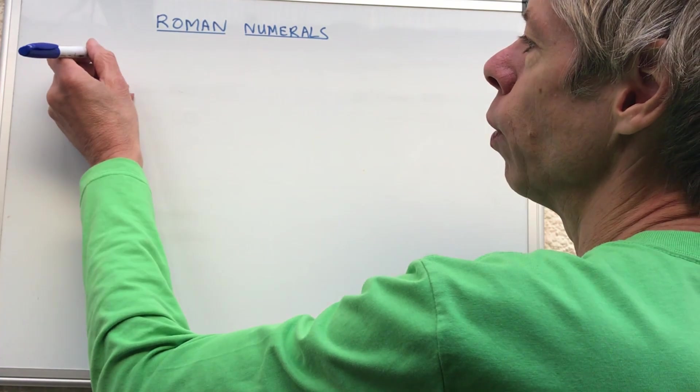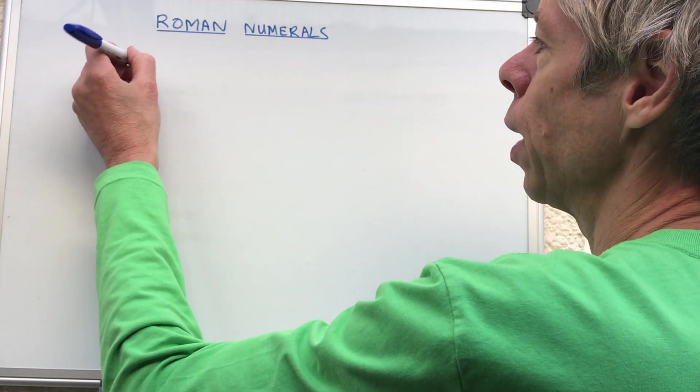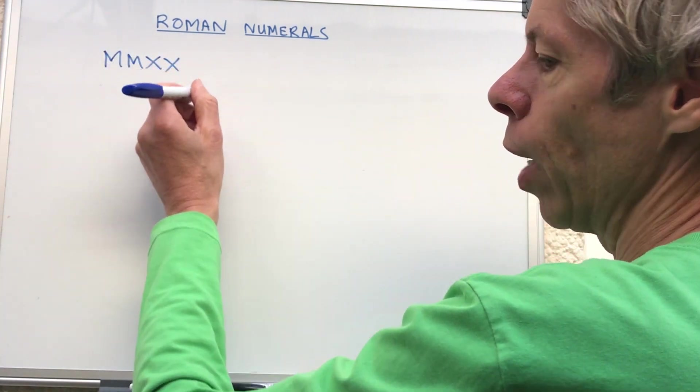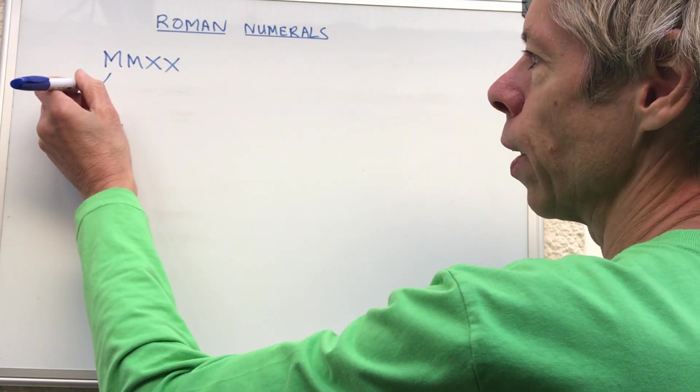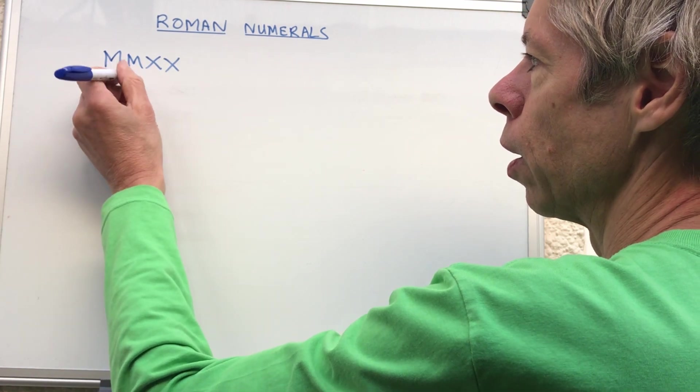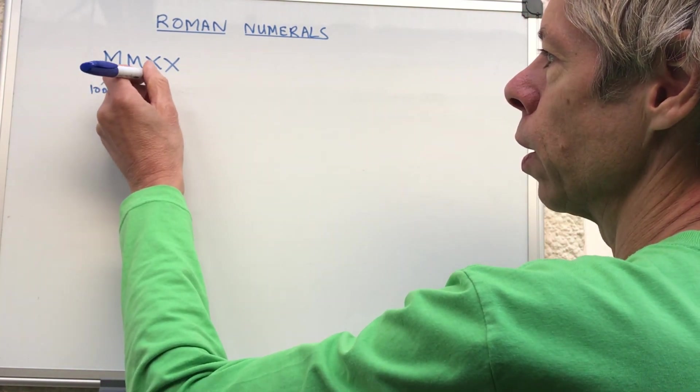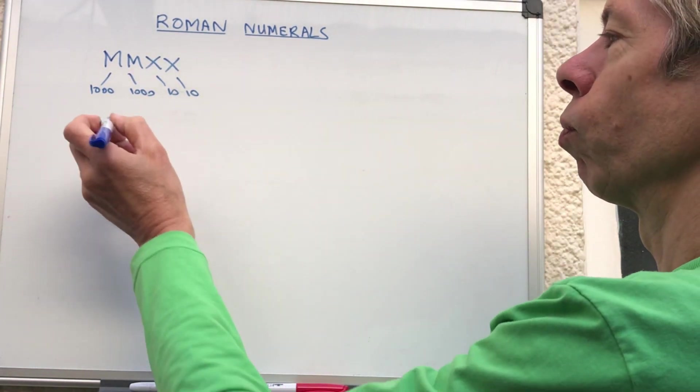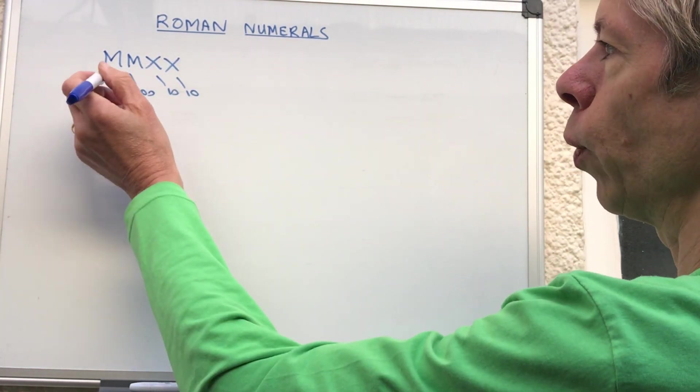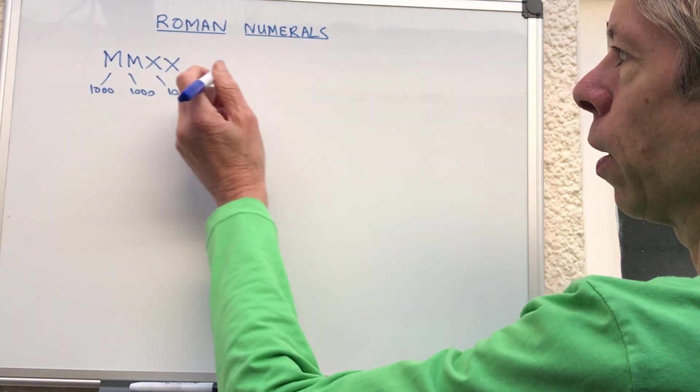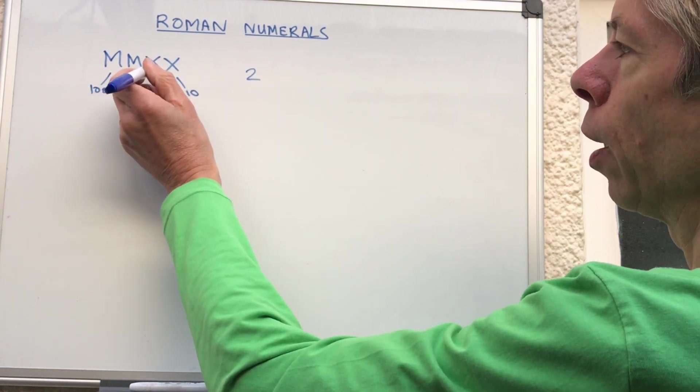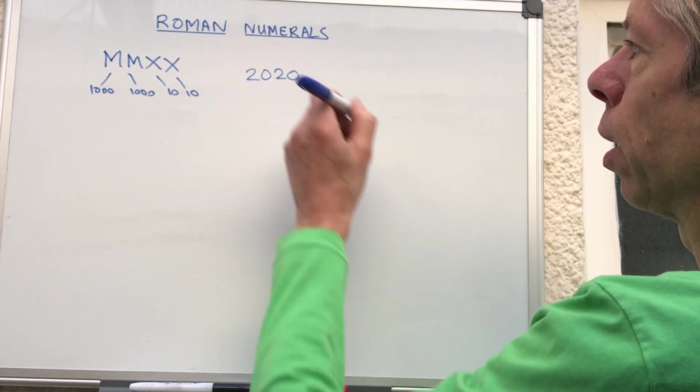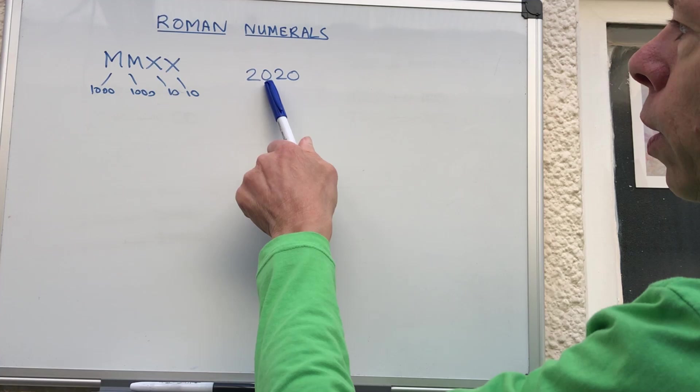For example, if it was made this year it would say MMXX because M is a thousand, so one thousand, one thousand, ten, ten. Basically Roman numerals add or take away, so we've got one thousand plus another thousand is two thousand, and then twenty, so ten plus ten is twenty - two thousand and twenty.